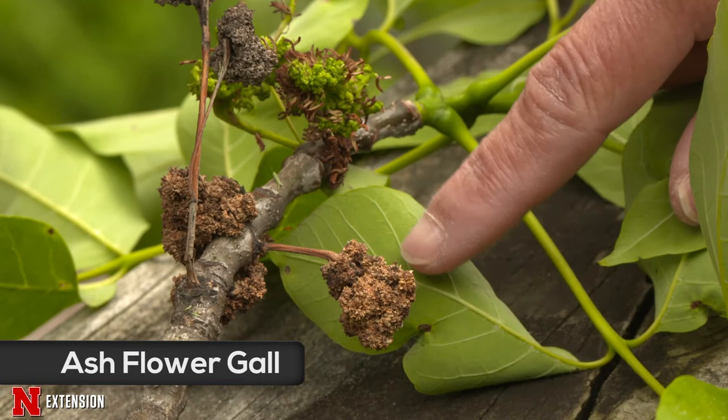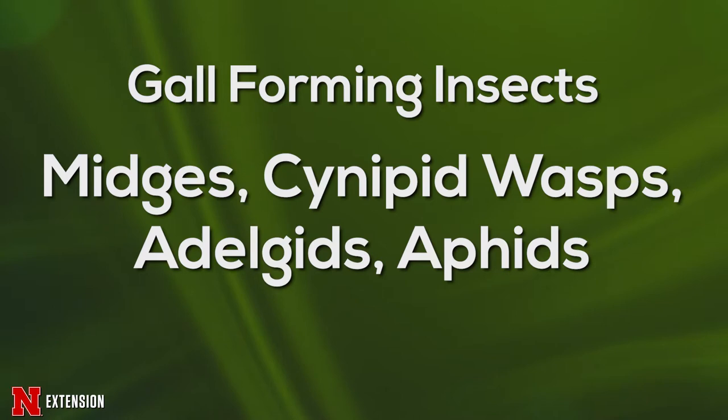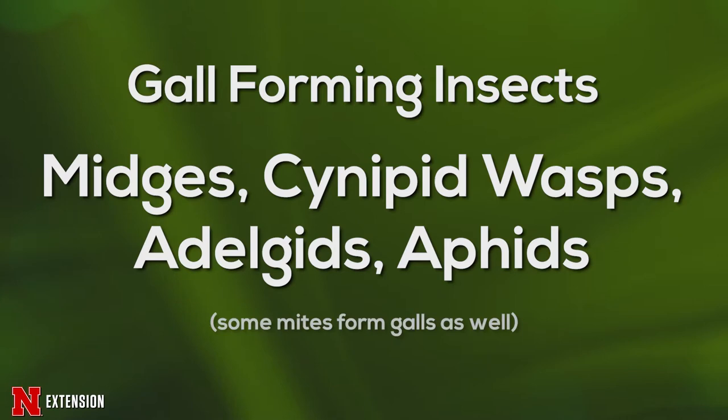Some gall makers include insects such as midges, which is another name for a small fly. We also have cynipid wasps, which are really tiny little wasps that can be making these galls. We also have adelgids and aphid-like insects. There are also mites that can cause galls on leaves.